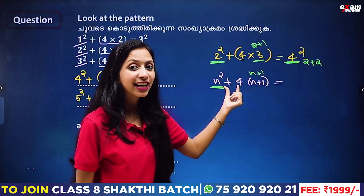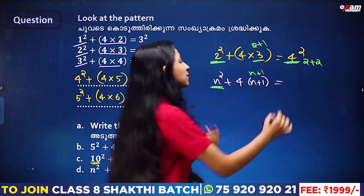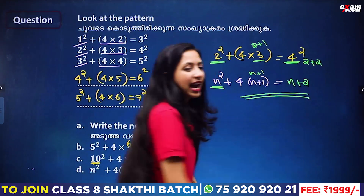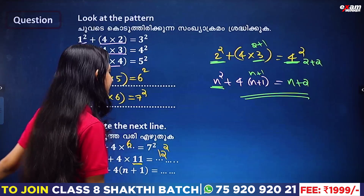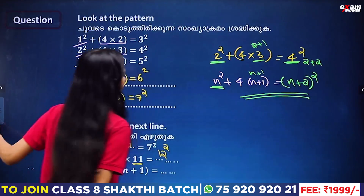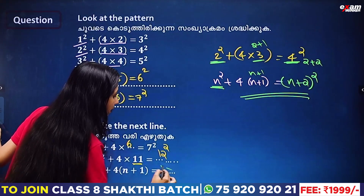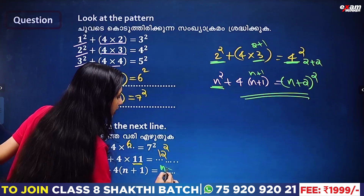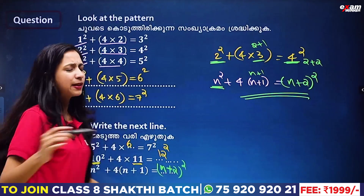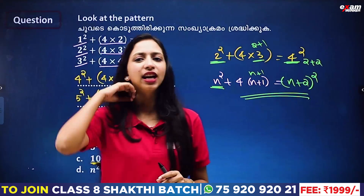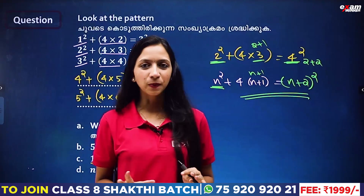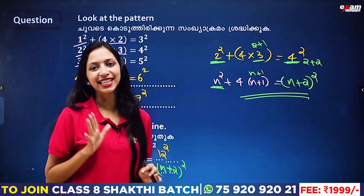If we look at n, n plus 1, n plus 2 — the answer is n plus 2 squared. You observe the pattern and you can see it here. If you have a good question, you can observe it in a good way, and that's why you can do it more easily.